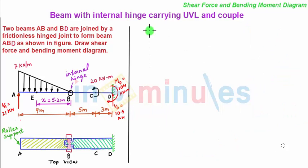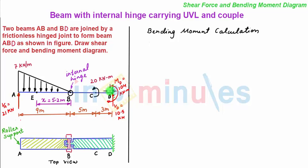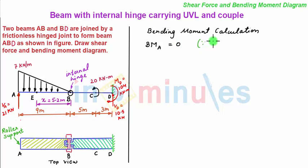Next, we start with bending moment calculation. We can start with point A and move towards point D. So first we take bending moment at point A. Now this will be equal to zero, since summation of all moments about any point — and if that point is A — is equal to zero.